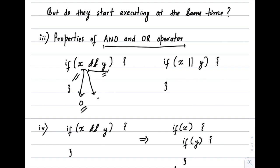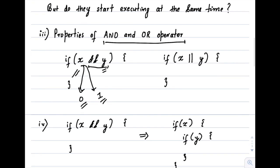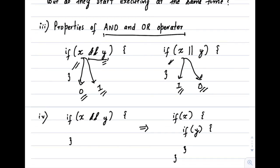For the OR operator: if X is 1, we do not need to look at the value of Y, since it will always be true whether Y is 0 or 1. But if the value of X is 0, we have to look at Y. If Y is 1, we can go inside the IF. If Y is 0, we cannot. So this is the basics of C programming short-circuit evaluation.